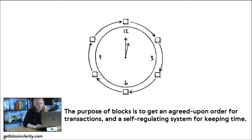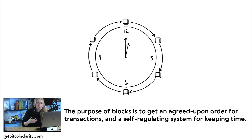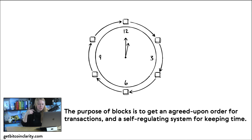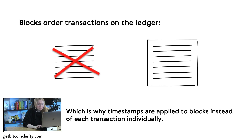As covered in an earlier video about the Bitcoin blockchain as a time chain, these blocks also function as a sort of tick in a vast decentralized clock. The Bitcoin blockchain uses blocks to keep time. Blocks order transactions on the ledger — that is the most important piece to take away from this video.